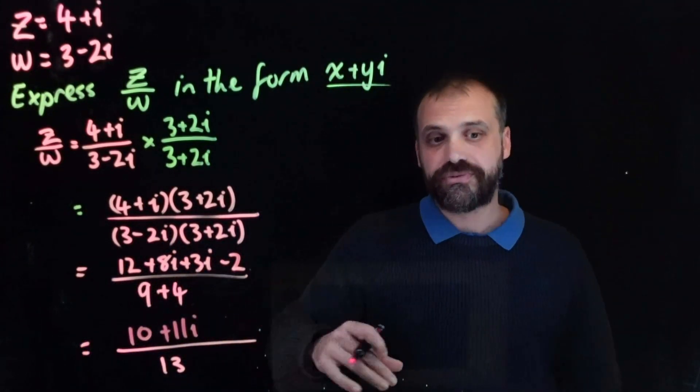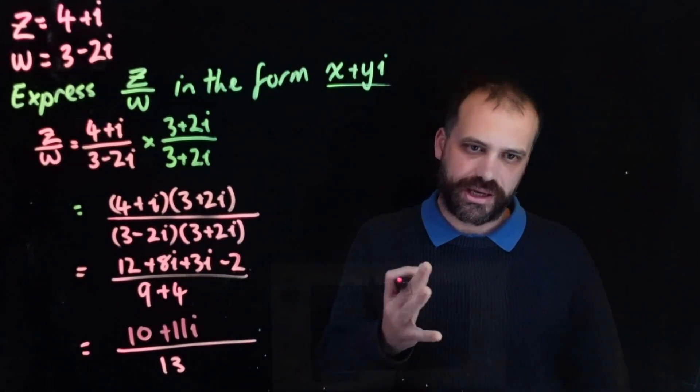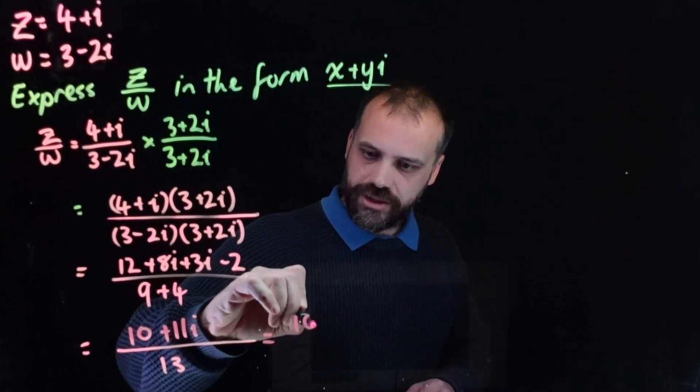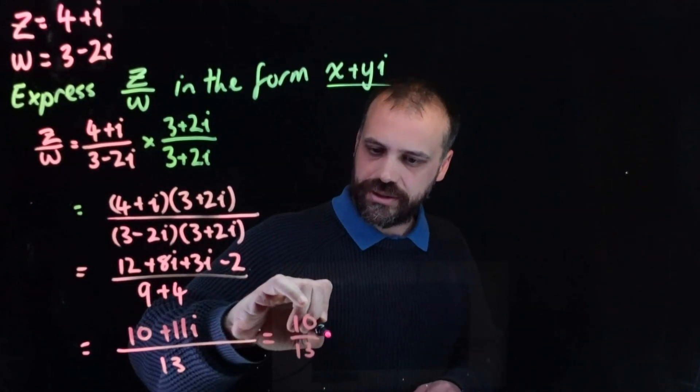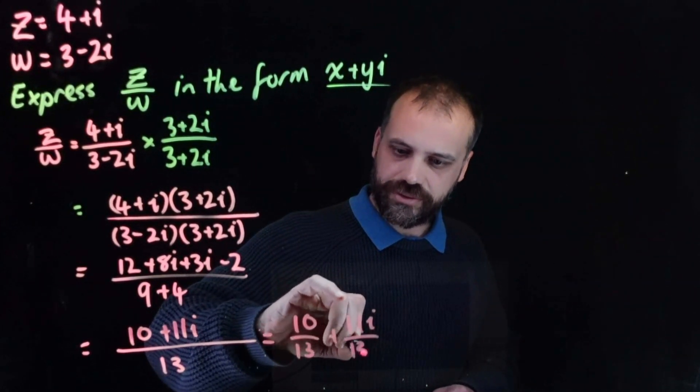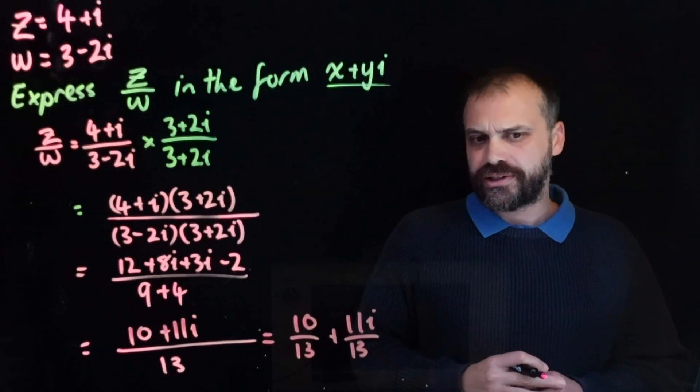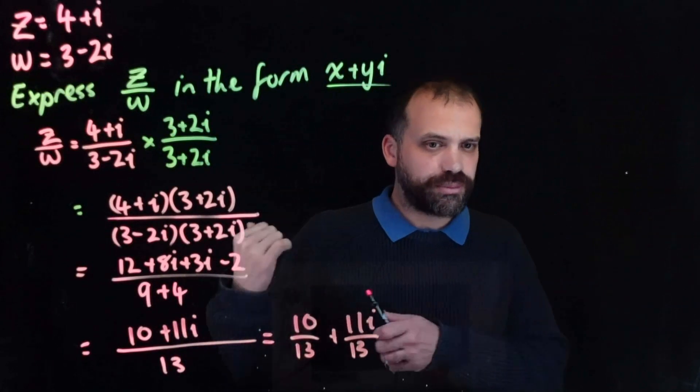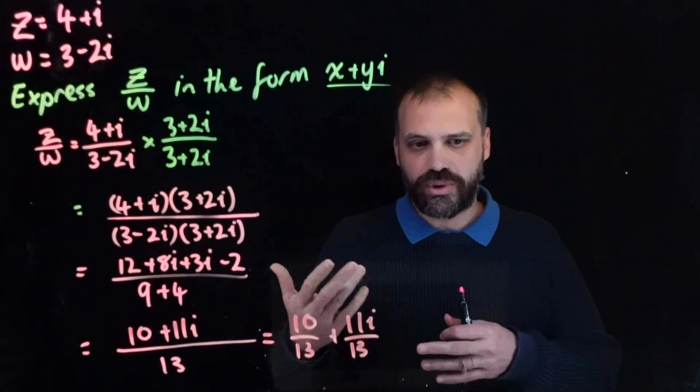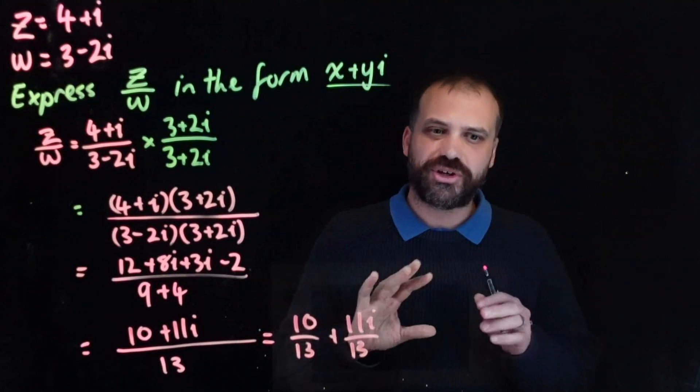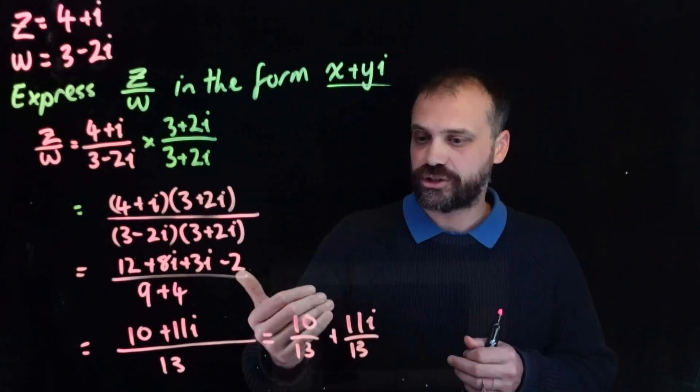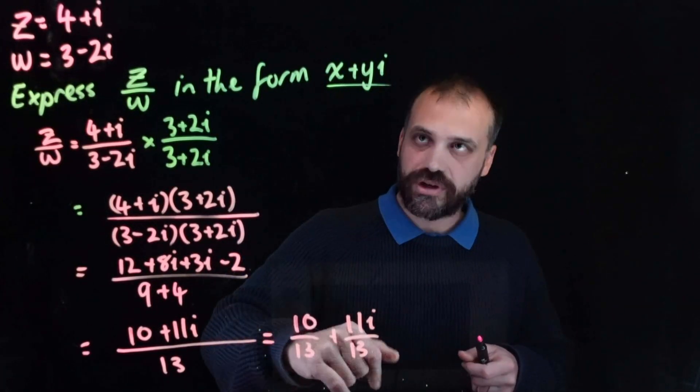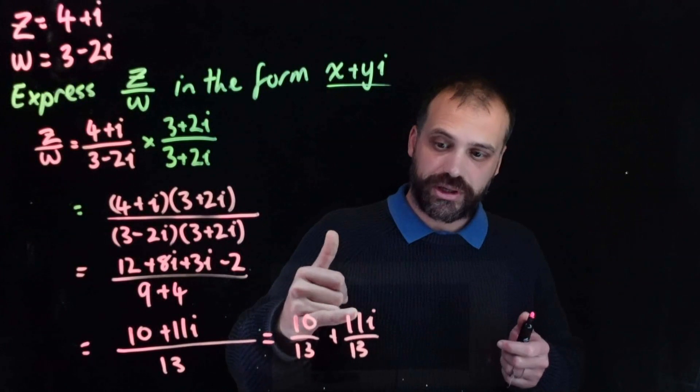You might think you're finished, but you're not finished because you've got to get it into this form here, x plus yi. So split it up. 10 over 13 plus 11i over 13. It's ugly, but that's the answer. I'm finished because I can't simplify that. It's not like the previous example where I just ended up with 1 and 1. 10 over 13, that's as simple as we get. Don't try to turn it into a decimal. Keep it as a fraction. The answer is 10 over 13, that's the value of x, and 11 over 13, that's the value of y, 11 over 13i.